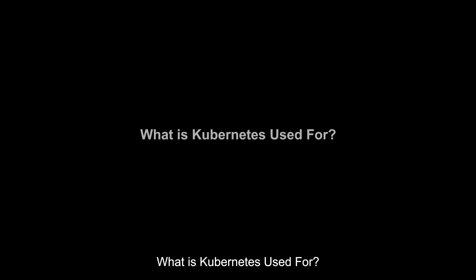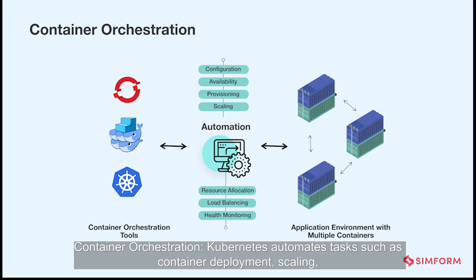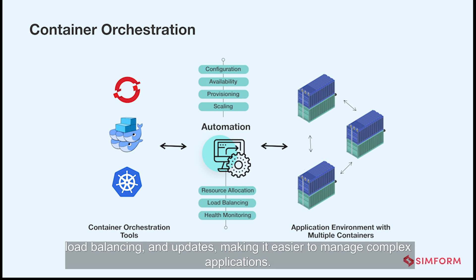What is Kubernetes used for? Container orchestration: Kubernetes automates tasks such as container deployment, scaling, load balancing, and updates, making it easier to manage complex applications.